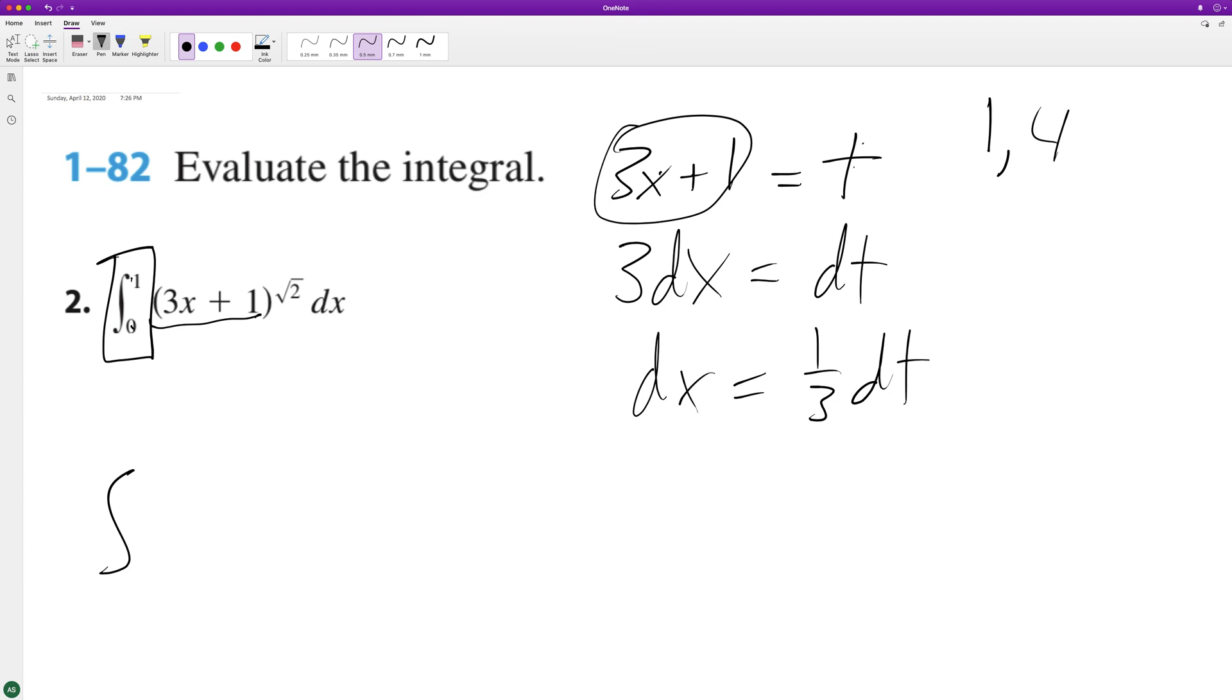So this becomes one-third times the integral from 1 to 4 of t raised to the square root of 2, dt.